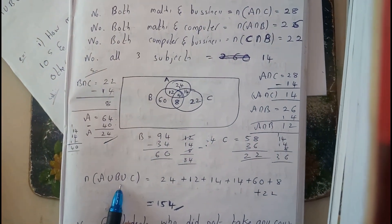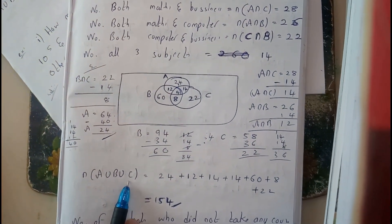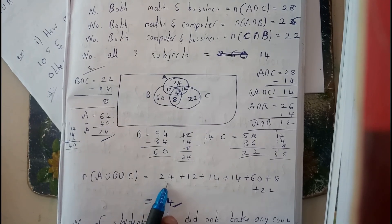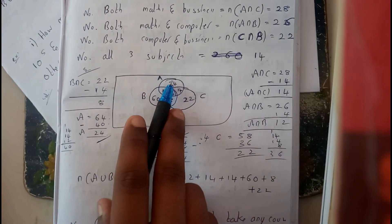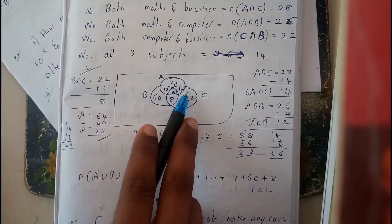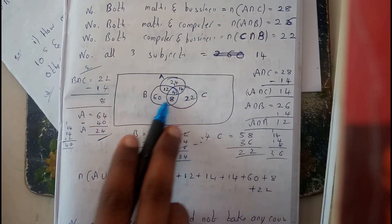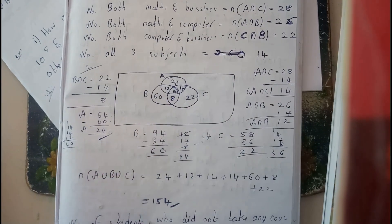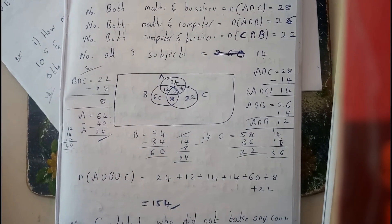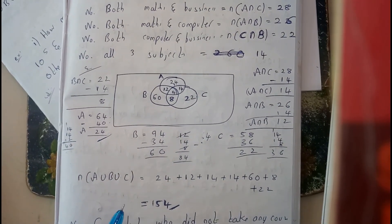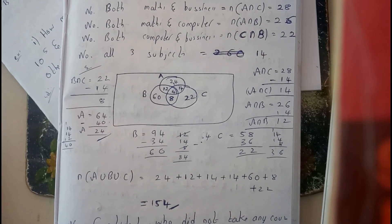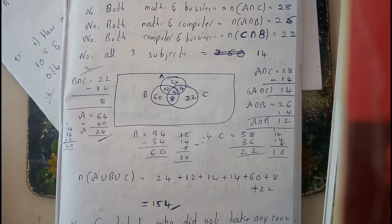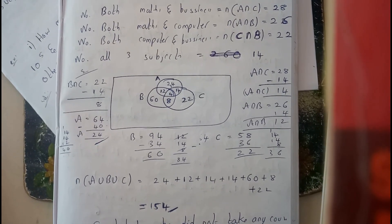N(A union B union C) equals 24 plus 12 plus 14 plus 14 plus 14 plus 60 plus 8 plus 22, which equals 154. So 154 students know at least one subject.